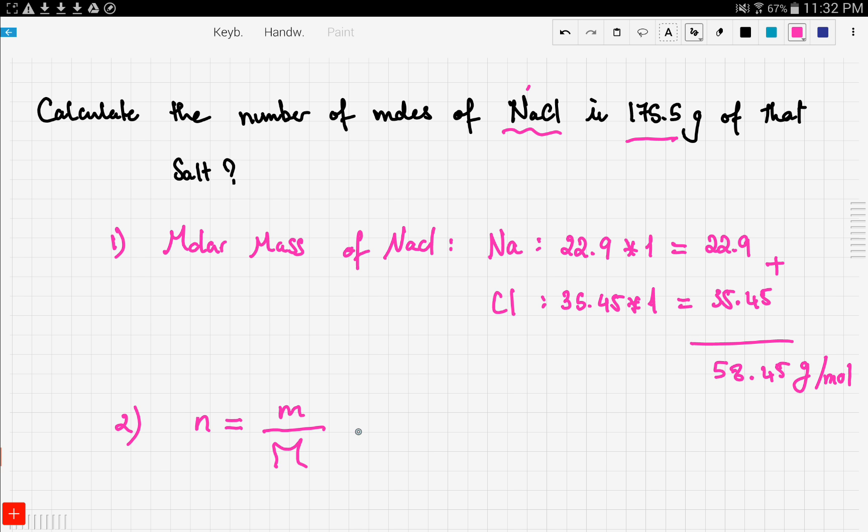Now let's see, so the number of moles will be equal to the mass which was given in the question, 175.5 grams, over the molar mass which is 58.45 grams per mole. You see here the units cancel, gram with the gram, and we're left with 3.003 moles of NaCl.